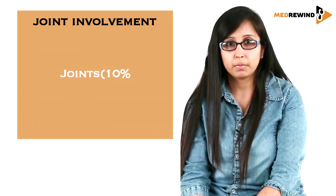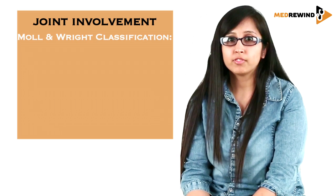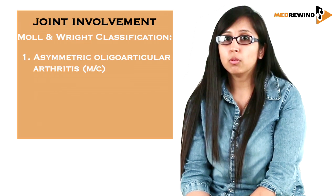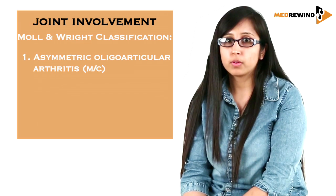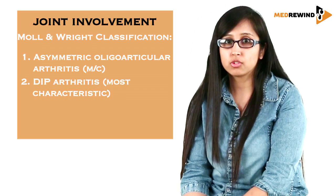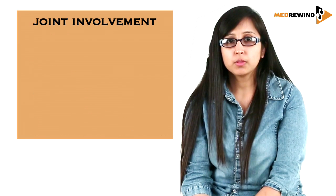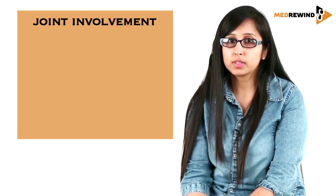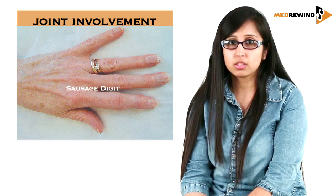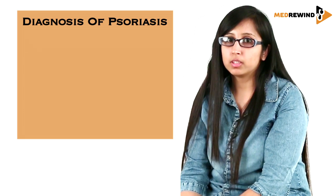Joint involvement is generally seen in around 10 percent of patients. The classification used is the Moll and Wright classification, which describes five types of arthritis in psoriasis. The most common is asymmetric oligoarticular arthritis, mainly involving the small joints of the hands and feet. The most characteristic is arthritis of the distal interphalangeal joint. Other types include rheumatoid arthritis-like arthritis and arthritis mutilans. X-ray signs include the pencil-in-cup sign, opera glass deformity, sausage digits, ivory phalanx, and telescopic fingers.